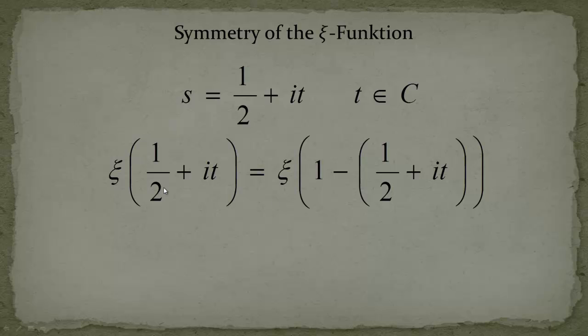If we plug this into the previous kind of functional equation of the xi function which was ξ(s) is equal to ξ(1 minus s), you will get this following stuff.